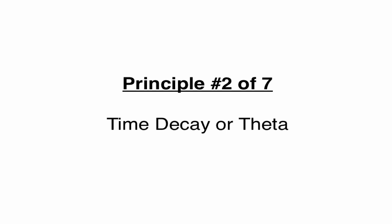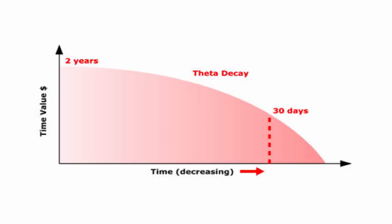So let's get into principle number two here. And that is what we had just talked about, this time decay or theta aspect of options trading. So as you can see here on this chart of time value versus time in general, which is decreasing, we know that options have a finite life. And what that means is that over time, no matter where the option goes, no matter where the underlying security goes, part of that option's value is going to slowly decay and decay each and every day.